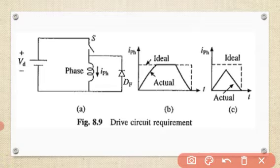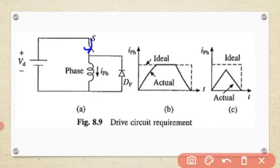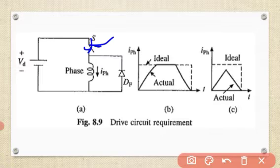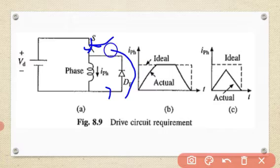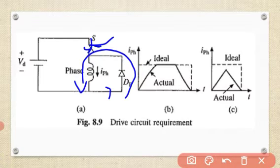When the phase is to be de-energized, the switch is turned off, which transfers the current to the freewheeling diode. The current flows through the freewheeling diode and drops to zero again at the rate decided by the time constant of the phase winding.